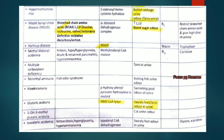Trimethylaminuria: patient has rotting fish urine odor — fish odor syndrome. Hawkinsinuria: deficiency of 4-hydroxyphenylpyruvate hydroxylase; swimming pool odor of urine. Glutaric aciduria: deficiency of HMG-CoA lyase; sweaty feet or acrid odor. Isovaleric acidemia: deficiency of isovaleryl-CoA dehydrogenase; sweaty feet odor with ketoacidosis, hyperglycemia and hyperammonemia.